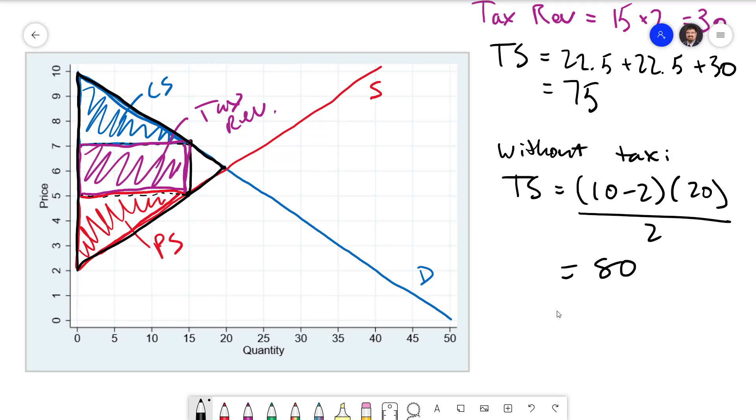The loss in total surplus due to a tax is called the deadweight loss. Here we can calculate the deadweight loss as 80 minus 75 which is 5. On the graph we can see that it's this small triangle that is lost.